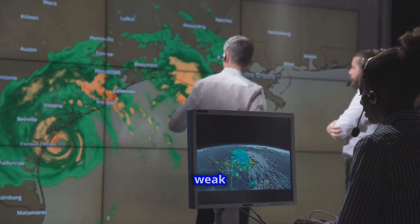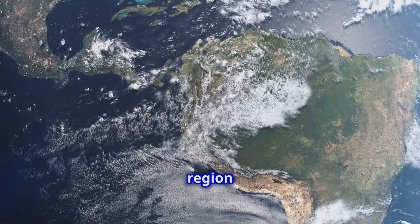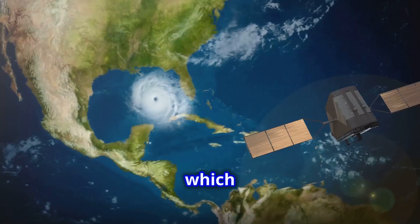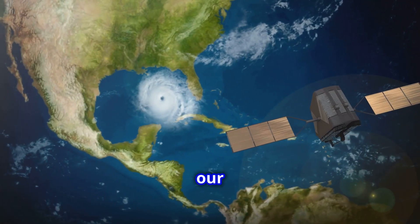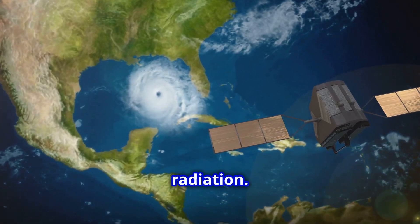Scientists have recently discovered a weak spot in the field, a large region over the Atlantic Ocean, which could have significant implications for our planet's protection against solar radiation.